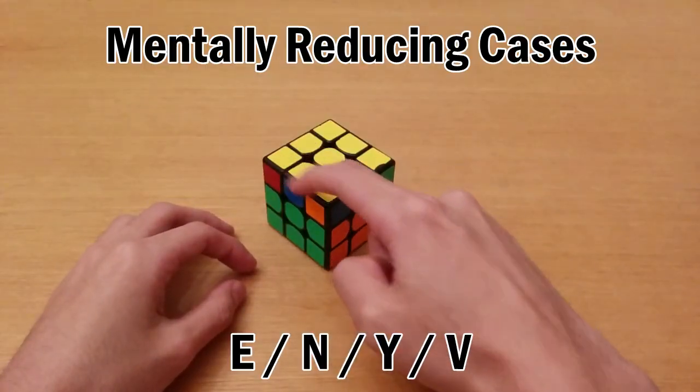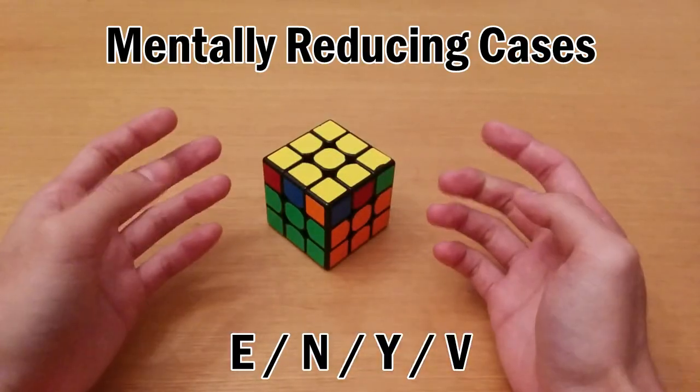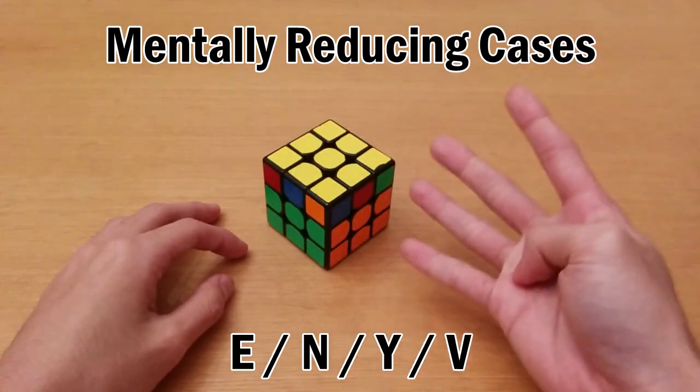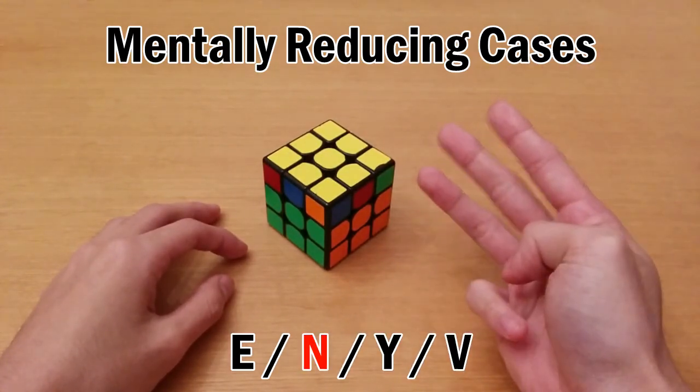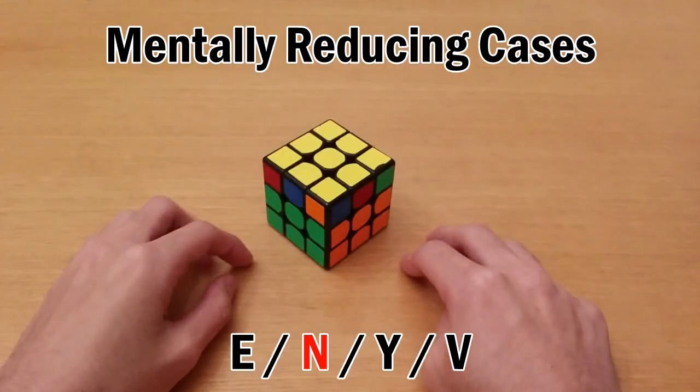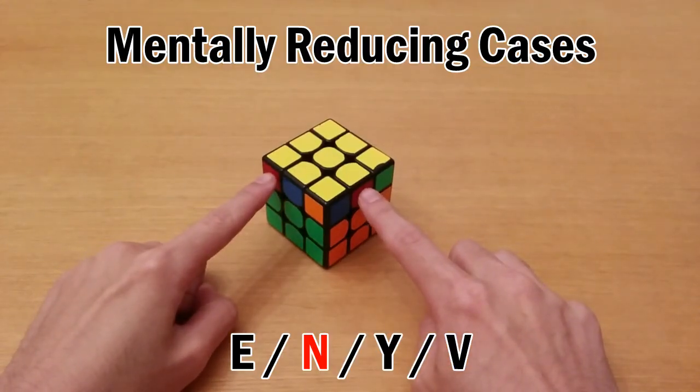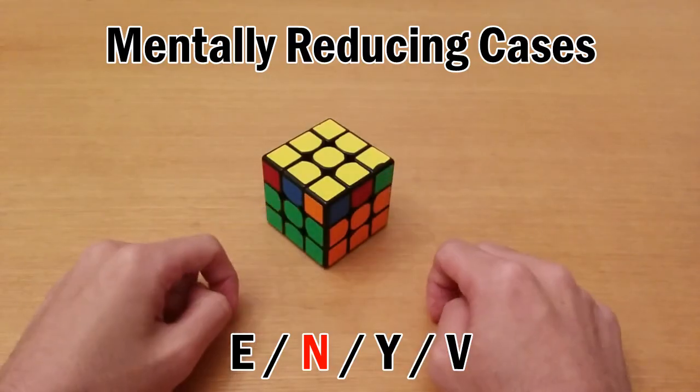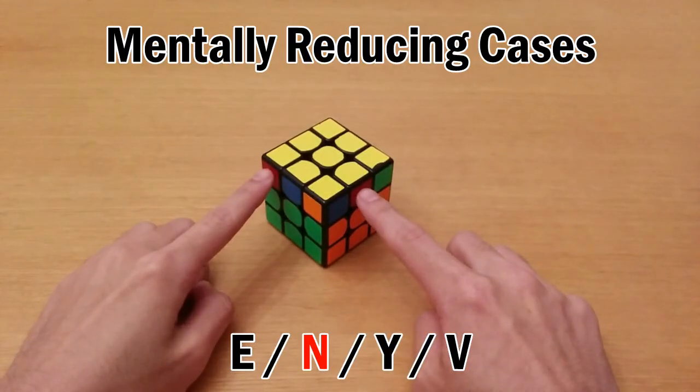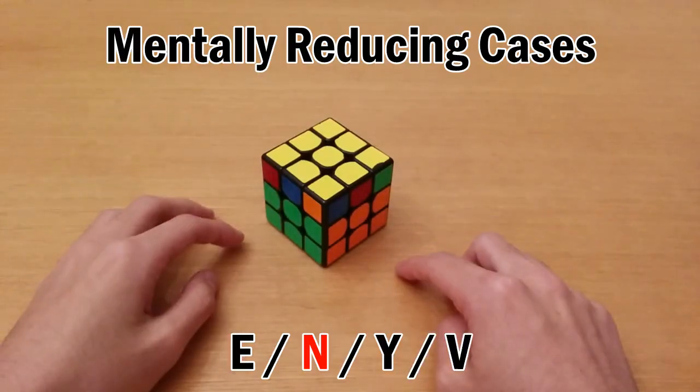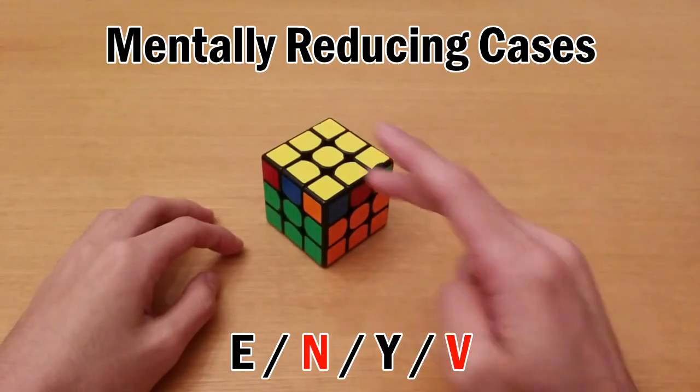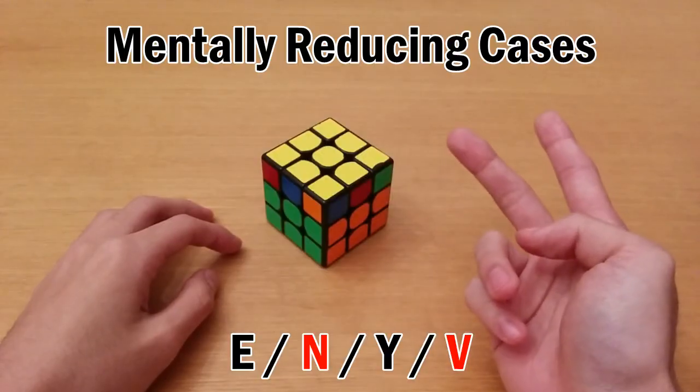So right now you see no matching stickers but an N-perm would always have matching stickers. So of the four diagonal swap PLLs you can reduce N-perm out of it. Now what you want to look for is these two stickers matching or these two stickers matching. And in this case at least one of those pairs do match so it will not be a V-perm. But if both of the pairs didn't match then it would be a V-perm.